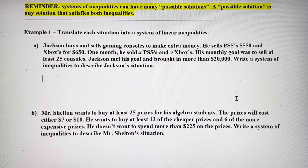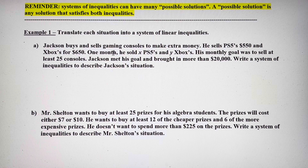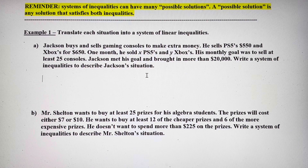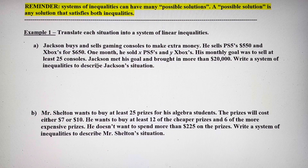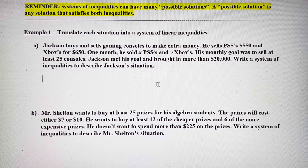Let's read example one, part A, and translate it into a system of linear inequalities. Jackson buys and sells gaming consoles to make extra money. He sells PS5s for $550 and Xboxes for $650. One month he sold x PS5s and y Xboxes. His monthly goal was to sell at least 25 consoles. Jackson met his goal and brought in more than $20,000. Write a system of inequalities to describe Jackson's situation.